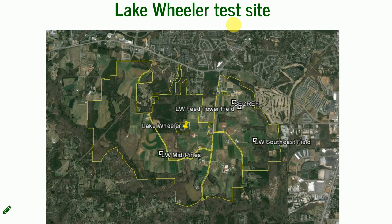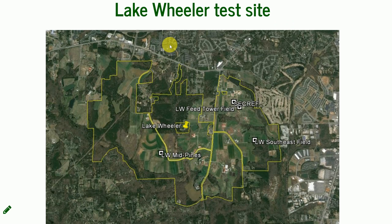Now we move into our test site, where we are going to be flying next week. The yellow line shows the border of the COA — the Certificate of Authorization — obtained by NCDOT. This is in Raleigh, south of the campus. If you want to find it on Google, you can type Lake Wheeler Road. This is Lake Wheeler Road and Tryon Road, and there are multiple parts and takeoff locations established by NCDOT.